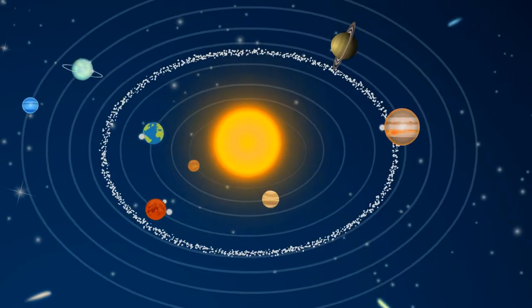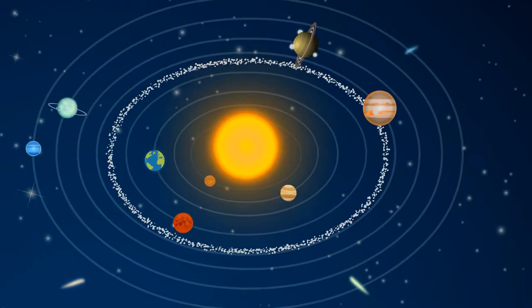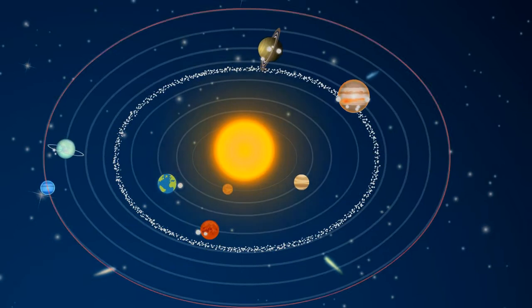As the eight planets circle around the Sun, they move in fixed paths, called orbits.